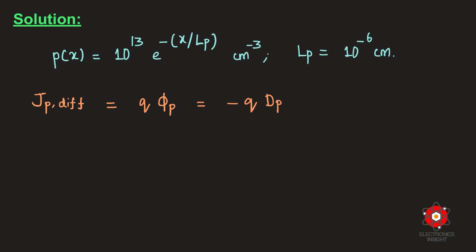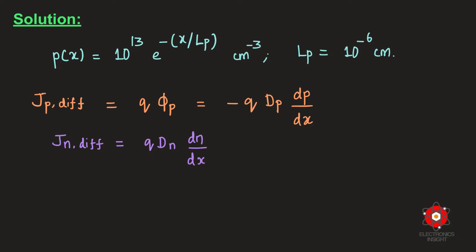Diffusion currents are completely due to the concentration gradient. For the same gradient, electrons and holes move in the same direction, but the resulting current densities are in opposite directions — that's why the negative sign appears. For electron diffusion current density it is q·Dn·dn/dx, expressed in terms of dp/dx or dn/dx respectively.